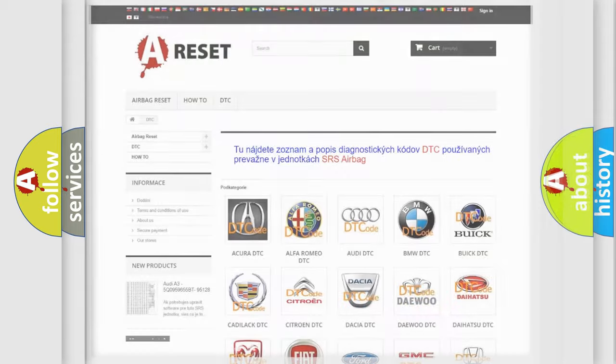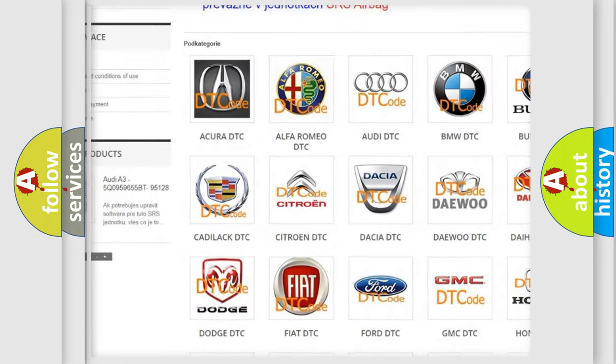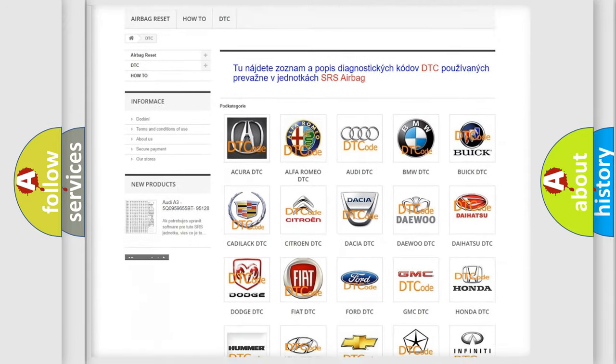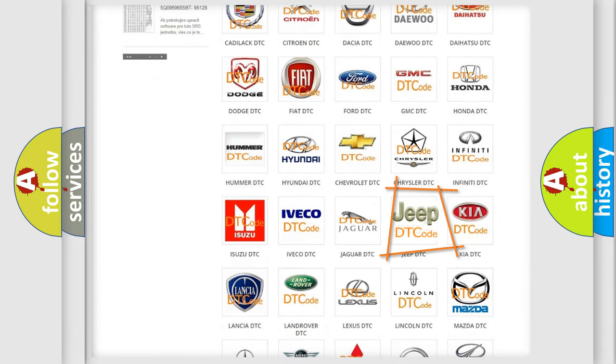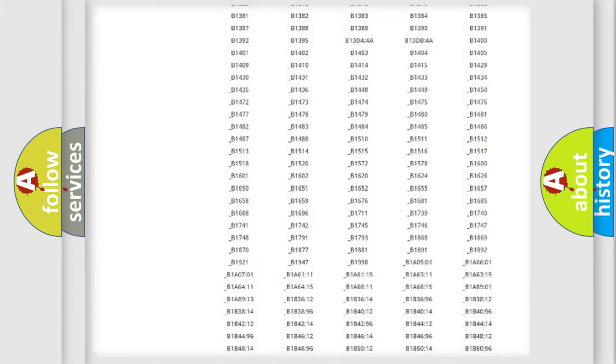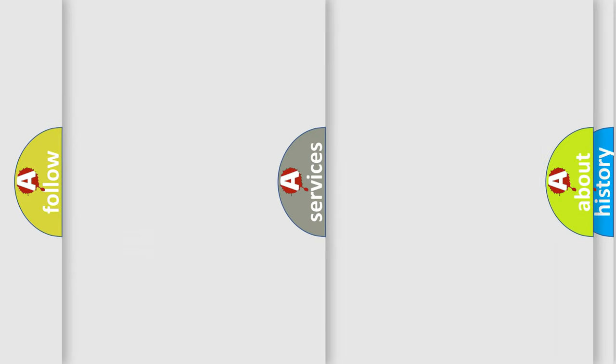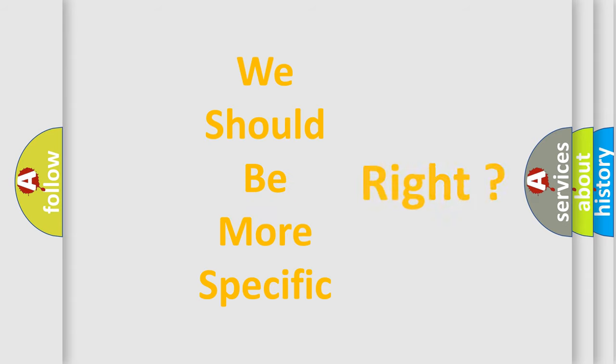Our website airbagreset.sk produces useful videos for you. You do not have to go through the OBD2 protocol anymore to know how to troubleshoot any car breakdown. You will find all the diagnostic codes that can be diagnosed in Jeep vehicles, and many other useful things. The following demonstration will help you look into the world of software for car control units.